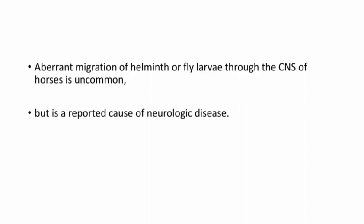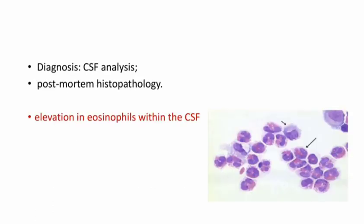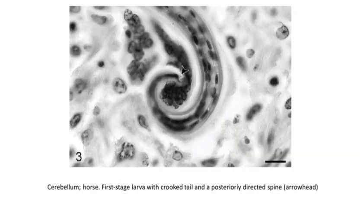These parasites cause inflammation associated with migration through the central nervous system. Signs can be variable — there will be multifocal neurological disease, hindquarter ataxia progressing to recumbency. Diagnosis is by CSF analysis and post-mortem histopathology. Elevation in eosinophils will be found in the CSF — you can see eosinophilia in the slide. Also shown is a first-stage larva with a crooked tail and posteriorly directed spine, indicated by arrowhead in the cerebellum of a horse.